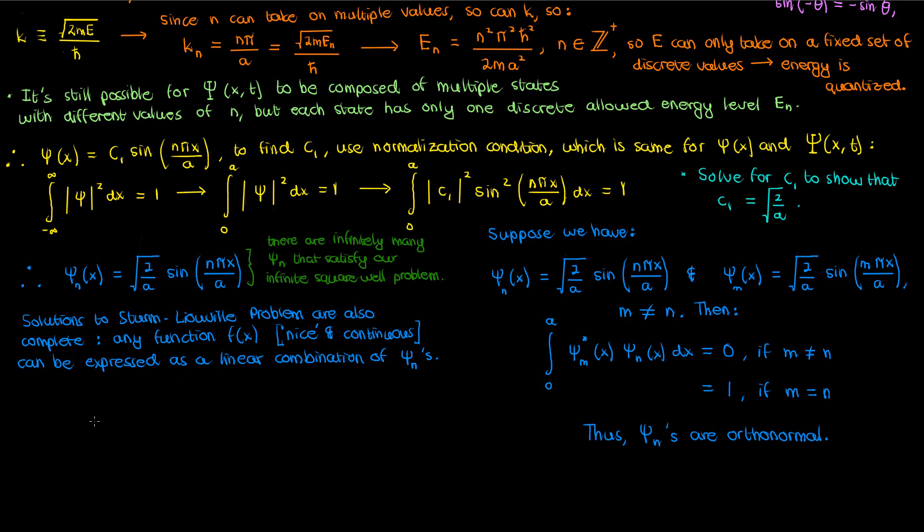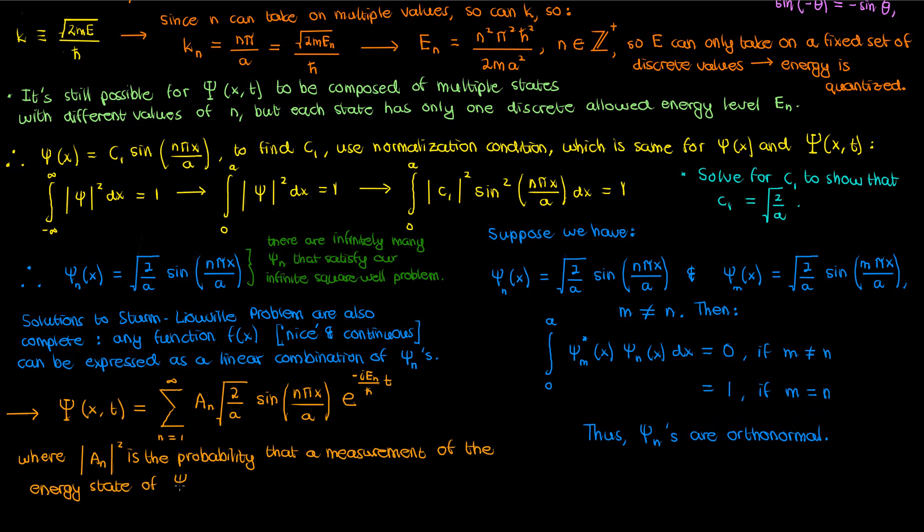And as mentioned in my stationary states video, the best way to account for all of these small psi's in our overall solution is to express our general solution big psi of x comma t as an infinite sum of these small psi times the exponential of negative i times E sub n over h-bar times t. The constants capital A sub n represent the probability that the energy state we measure of the wave function is E sub n.